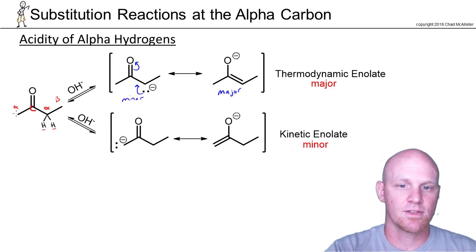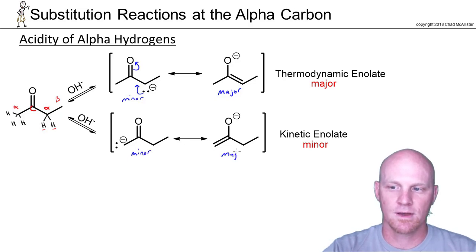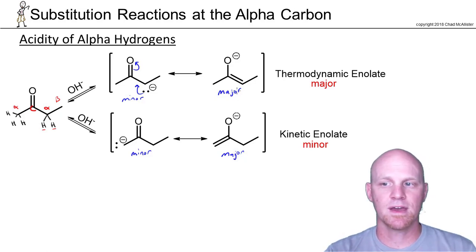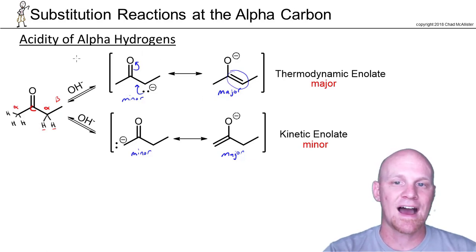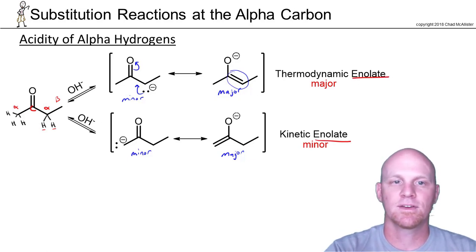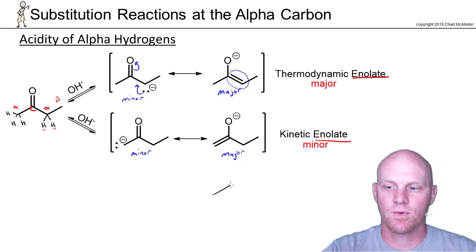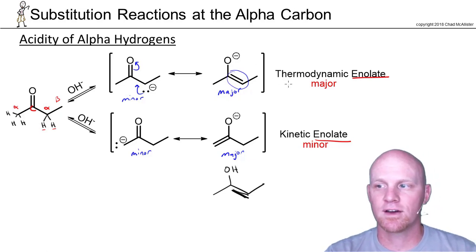We also have another alpha carbon on the other side, so deprotonating there leads to another possible enolate with its own two resonance structures — a minor and a major. Comparing the two major resonance structures, the more substituted pi electrons make the top structure more stable. These structures are called enolates — they're like the conjugate base of an enol, where an enol is an alkene and alcohol at the same carbon. Deprotonating that hydroxyl gives the major resonance contributor, the enolate, and that's where the name comes from.